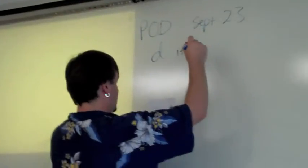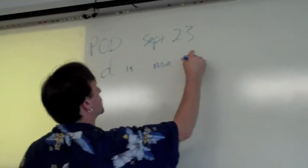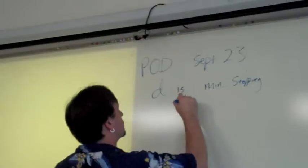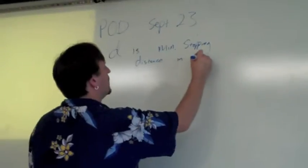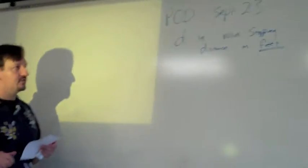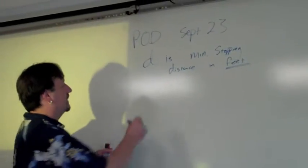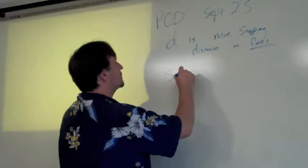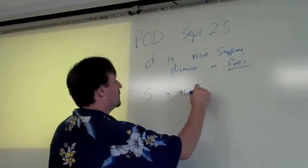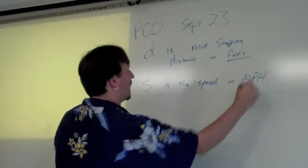d is minimum stopping distance in feet. And I find it interesting that this formula gives this to us in feet even though the speed is in miles per hour. Happens that way sometimes. The speed s is the speed in mph, miles per hour.